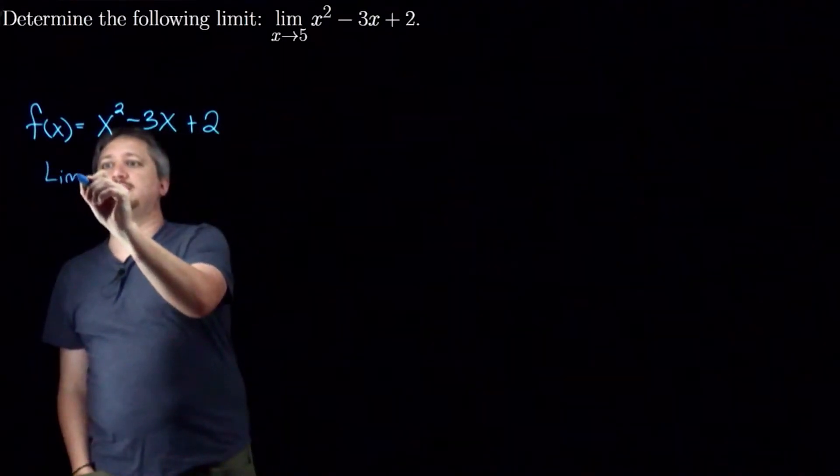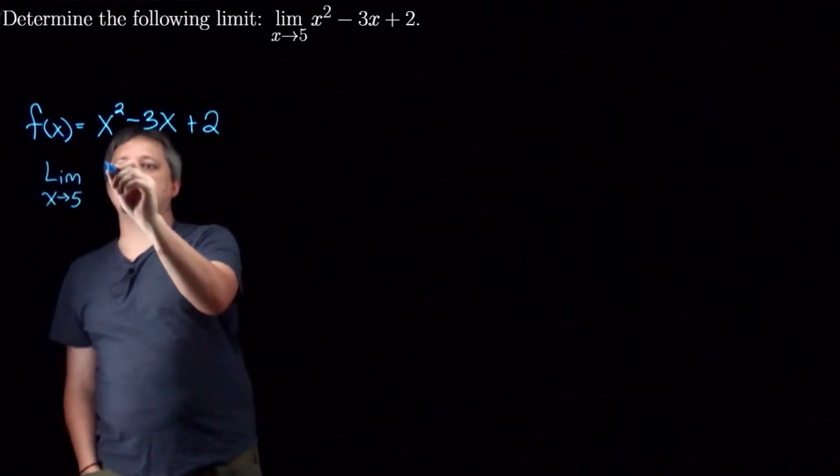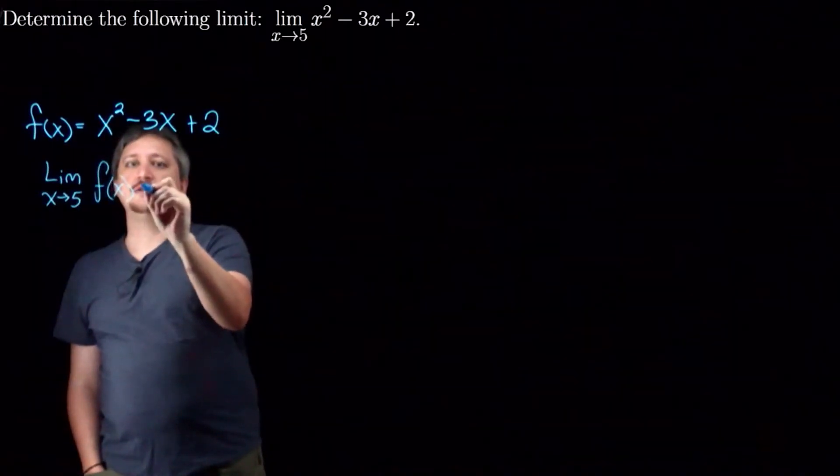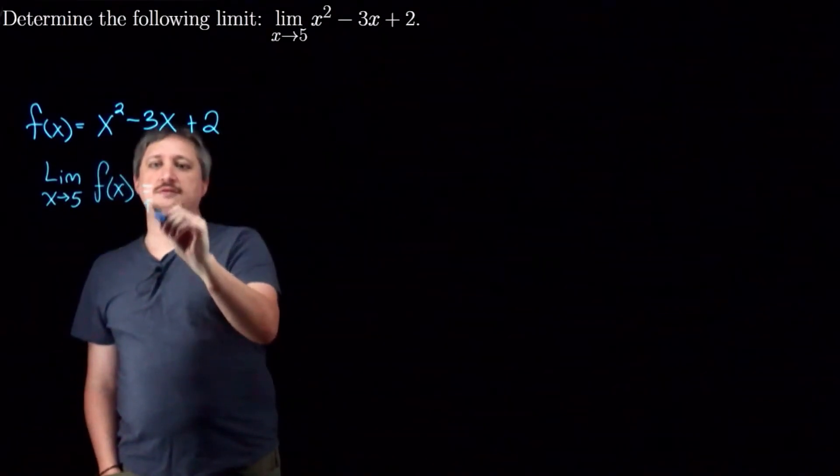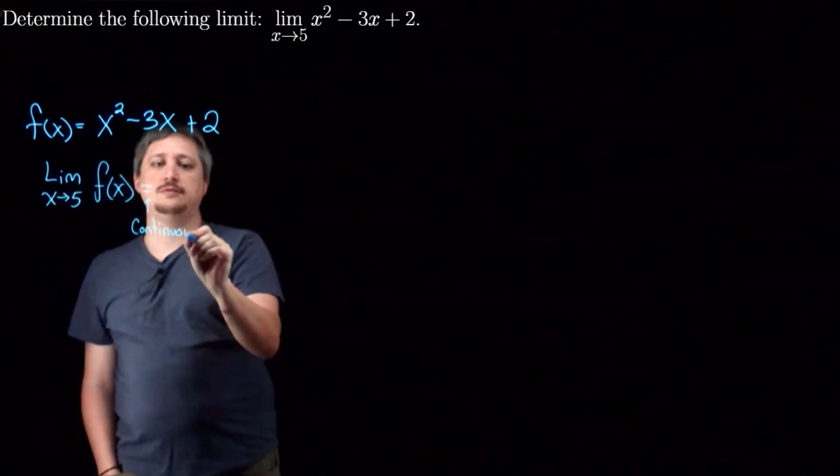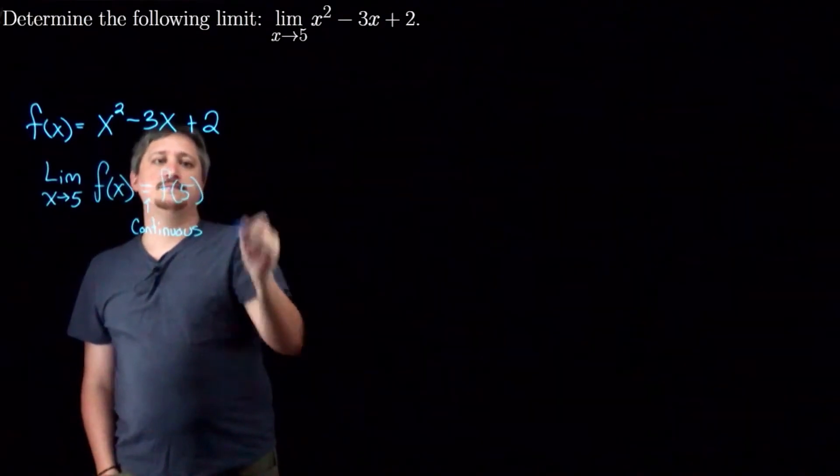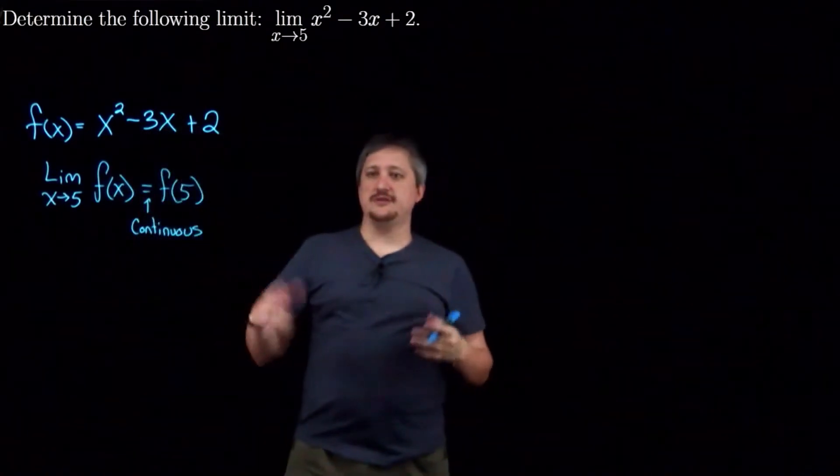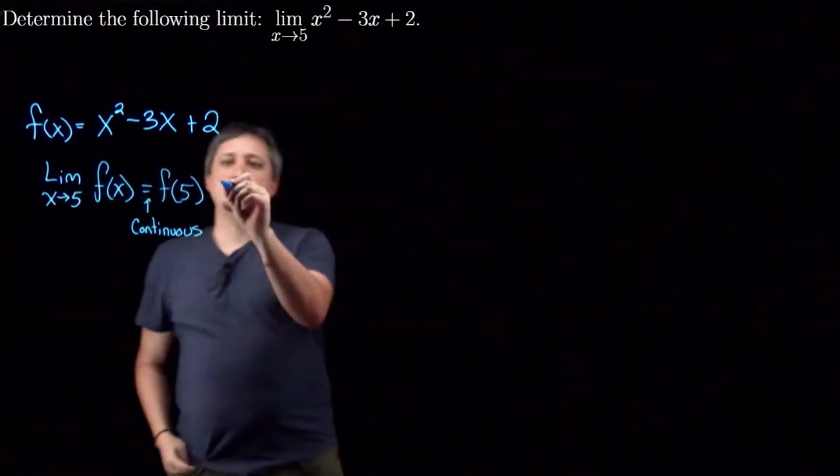So in particular, the limit as x approaches 5 of this thing, which we're going to think of as this f of x, is, because f of x is continuous, so because this is continuous, I get this equals just f of 5. So this is sort of the long explanation version of the fact that I can just plug the 5 in and compute.